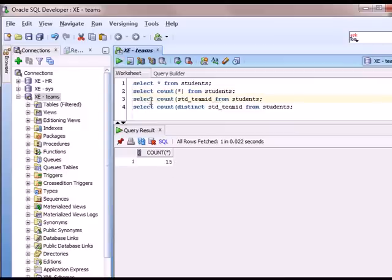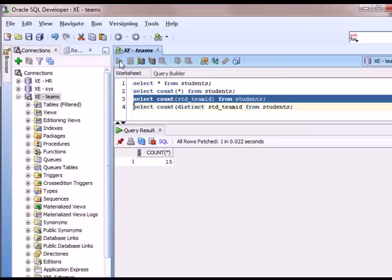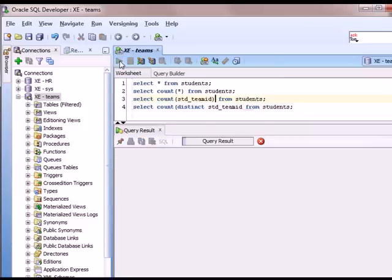Now if I do the select count, missing a parenthesis, if I do select count and specify field in that row, we'll see that the result comes back as 13. Why? Because it's ignoring the two null records. There are two student records where no team ID has been assigned.